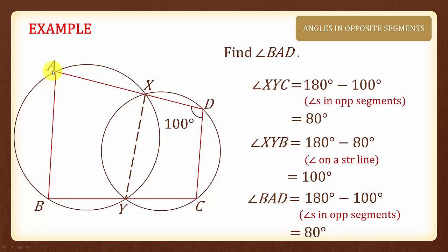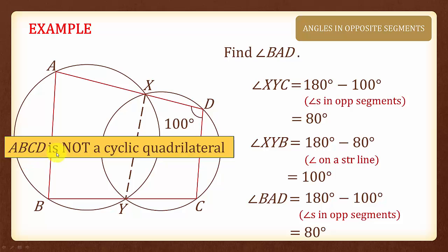Now, you cannot apply angles in opposite segments for ABCD because ABCD is not a cyclic quadrilateral. And hence, you must divide the diagram into two cyclic quadrilaterals by joining X and Y before you can apply the angle property angles in opposite segments.